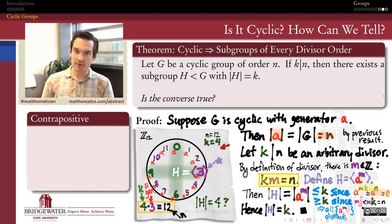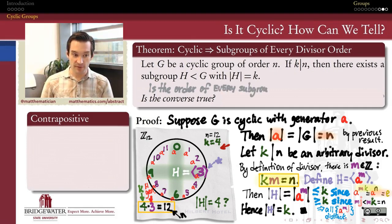You might ask yourself, is the converse of this statement true? By converse, what I mean is the statement that reads as follows. Is it true that every subgroup inside of my cyclic group has its order equal to a factor of n? Could I possibly find, for example, inside of a cyclic group of order 20, a subgroup of order 15? Even if that subgroup were not cyclic, could I construct it in some other way? That's a question we won't answer in this video.